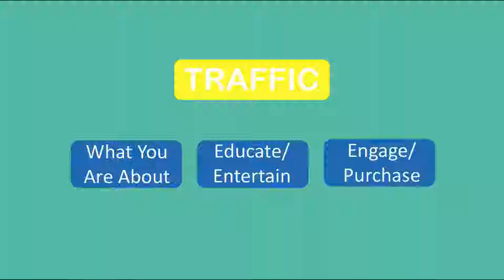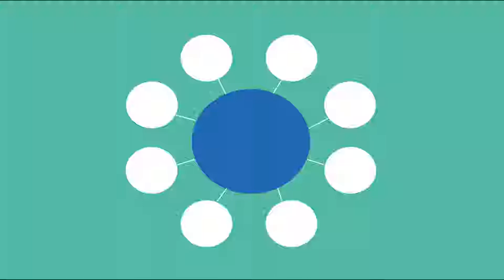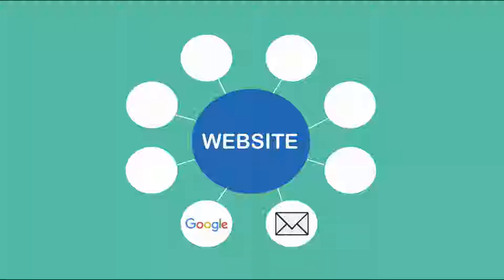One marketing strategy to increase traffic to your site is referred to as the hub and spoke strategy, or the home base and outpost strategy. Your website is at the center, and the spokes or outposts bring traffic back to your site where it can be monetized — through organic search results like Google, links in emails to your subscribers, and social media.